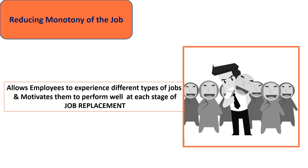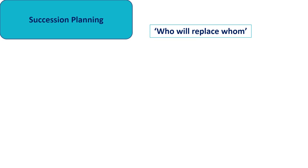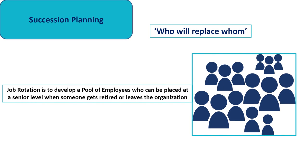The second objective is succession planning. The concept of succession planning is who will replace whom. Its main function in job rotation is to develop a pool of employees who can be placed at a senior level when someone gets retired or leaves the organization.